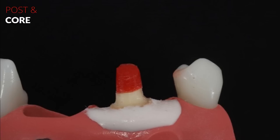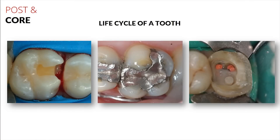Today's lecture is centered around the idea of a post and core and endodontically treated teeth. Before we dive into that subject, let's first take a look at a typical life cycle of a tooth. Many times a tooth will start off with a small cavity, which then years later turns into a bigger cavity that requires a larger restoration, and eventually something like this will be undermined with caries again, oftentimes resulting in a need for a root canal.